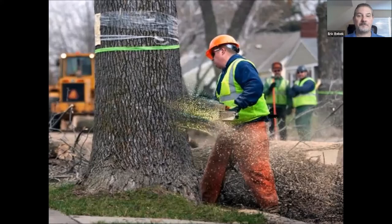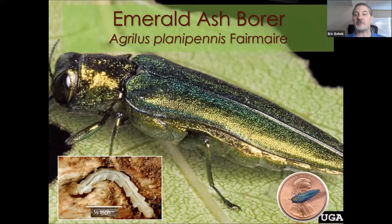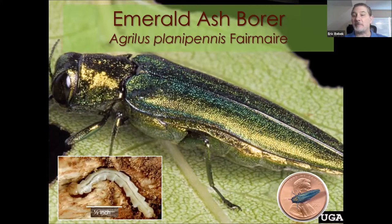That story is certainly true for emerald ash borer, our first case study today. This is going to be an update of what's going on with this species and how it's affecting us here in Oklahoma. The scientific name is Agrilus planipennis. It is a Buprestid beetle, in the family Buprestidae — the jewel beetles. You can see why we call them jewel beetles: they are very metallic and shiny, gorgeous beetles in their own right. But of course, the damage they do is not so pretty.